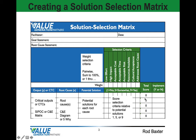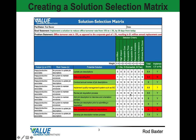A score of 1 means no — this solution does not meet the selection criteria. A 5 means it somewhat meets the criteria. And a 9 means it fully meets the criteria.